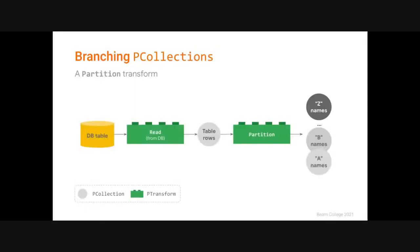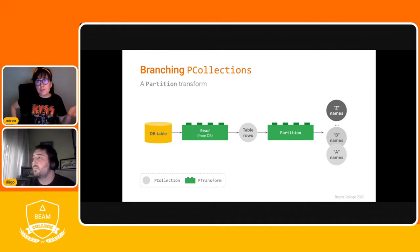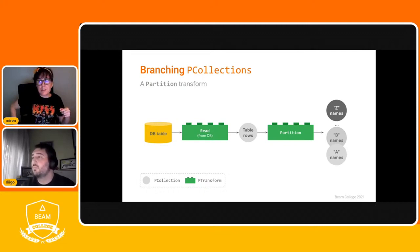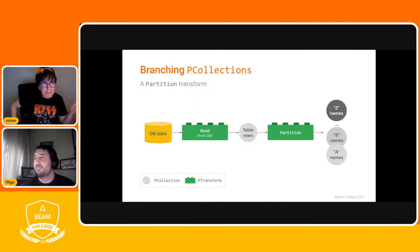For a more practical example, we have read a P-collection of names from a database and we want to split them alphabetically. That's a perfect use case for the Partition transform using a partitioning function that takes the first character of the name and, based on its value, returns the partition number that the element belongs to — zero for A, one for B, et cetera. Now Inigo is going to run a few examples demonstrating all this in a code lab.